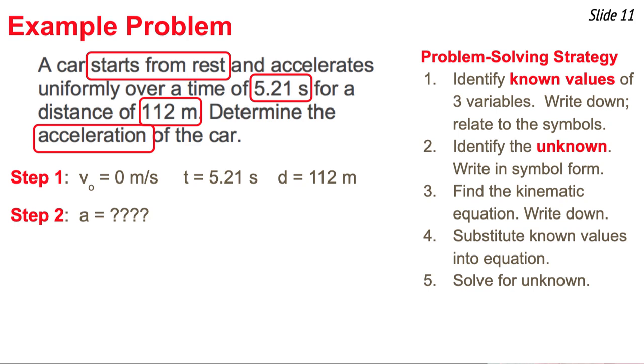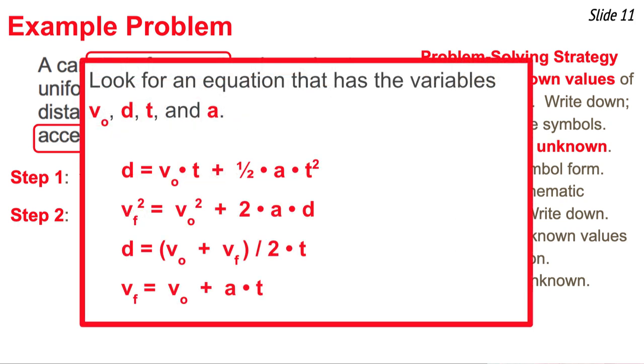And what I'm going to do is find the equation that has these four variables in it. So here's the list of four, and I'm looking for the one equation that has the original, d, t, and a. So just start at the top of the list and go down from top to bottom, looking to see which equation has these four variables in it. And when you know it's the top equation. So now I'm going to write that top equation down.